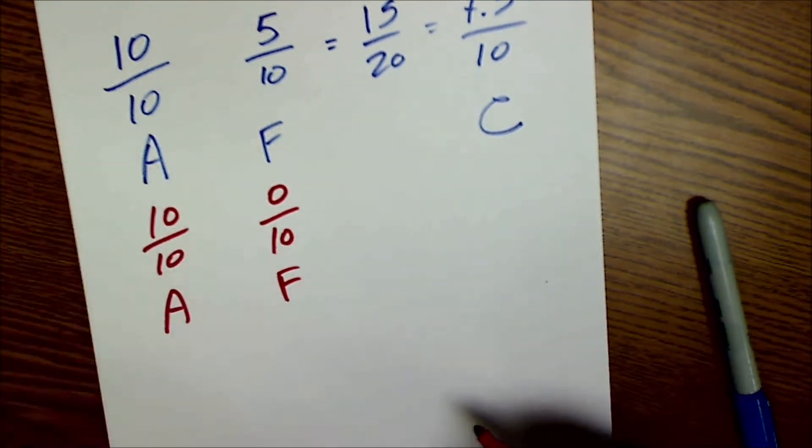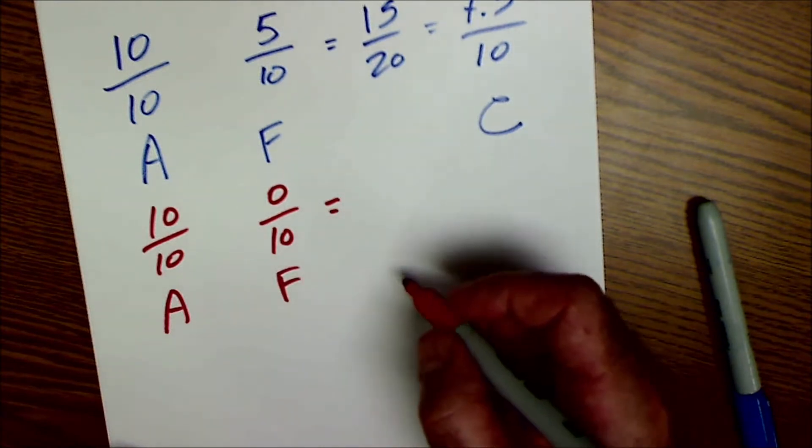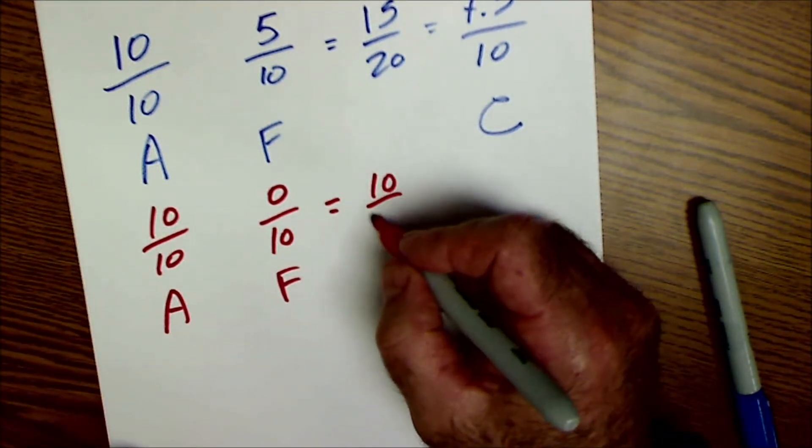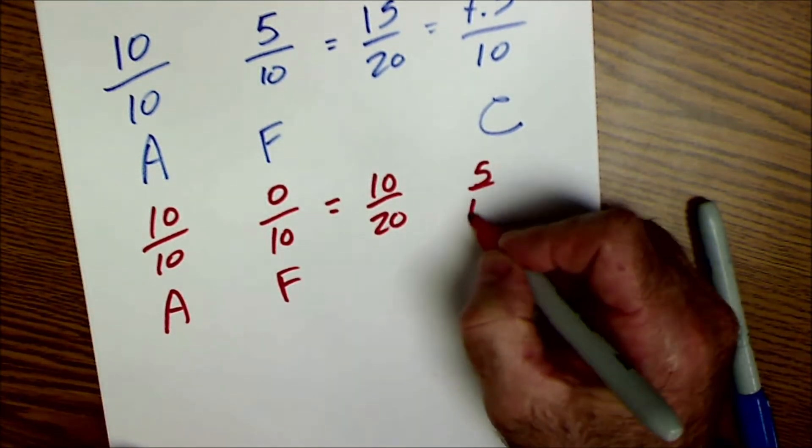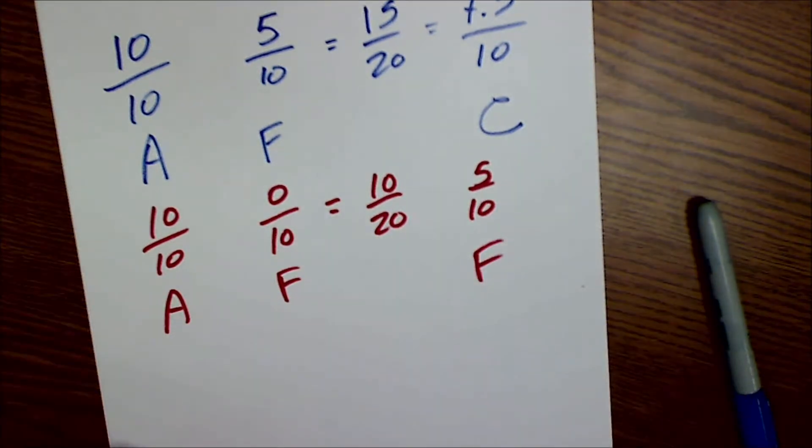So both cases: an A and an F. However, when I average these out, I get 10 out of 20, which reduces to 5 out of 10. It averages out to an F.